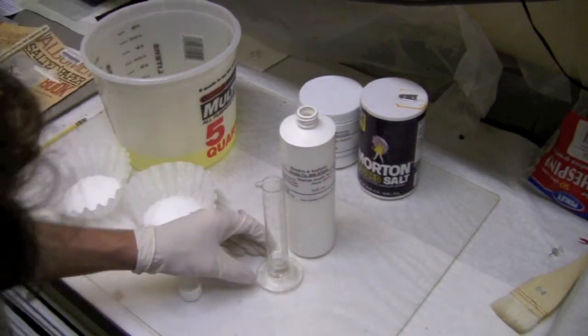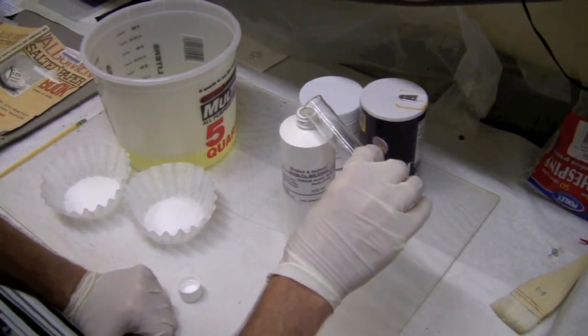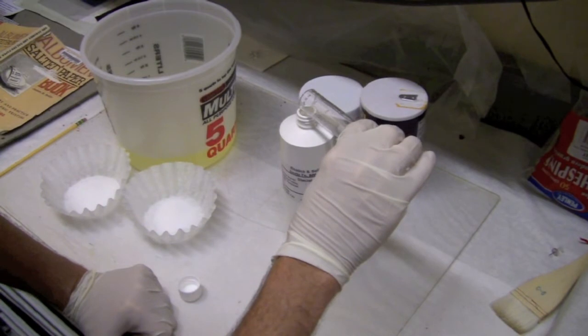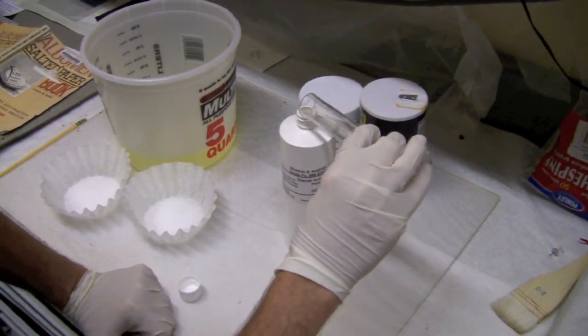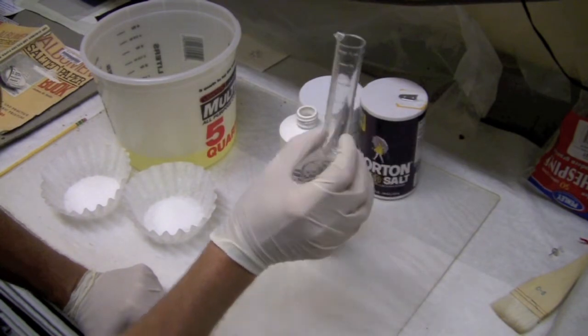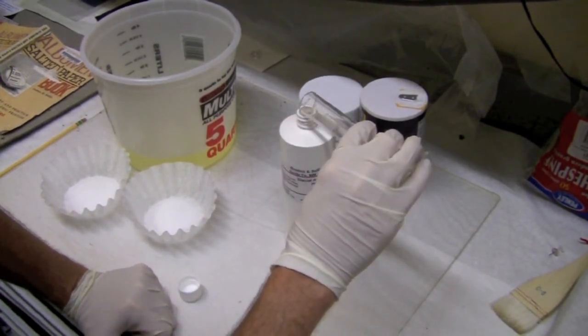With the glycolic acid, it'll be easier if you pour out a little extra and then pour it back into the bottle to get it measured. Because it's such a small amount, it's really hard to pour out only the 2 milliliters.